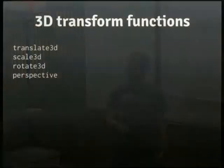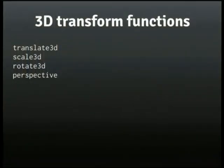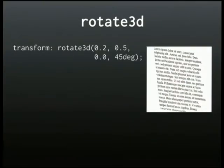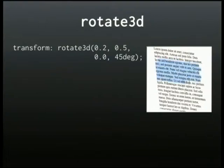You also have 3D transform functions. These work pretty much the same way — you get translate, scale, rotate, and a perspective transform. Here's an example: it looks like it's been skewed, but this is actually just a 3D rotation. It's just leaning forward a bit as well. And again, this is just regular text — it's rotated that way and leaning forward.